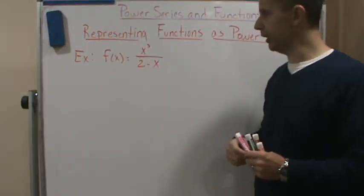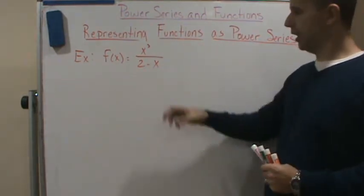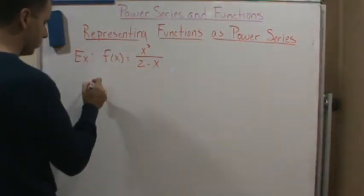Okay, so in this example we're going to do the same thing for this one. Again, same process. We're going to try to make this one into this, trying to get into the form of a over 1 minus r.